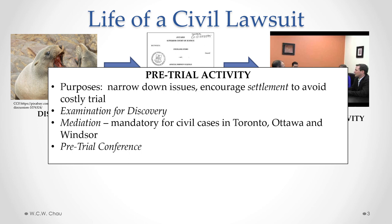The final step before actually going to trial is something called a pretrial conference. A pretrial conference involves the two parties and their lawyers meeting with a judge — not the judge that will hear the trial, but a real judge of that court. The judge will be appraised of the evidence obtained through discovery and will provide his or her opinion about the strengths and weaknesses of each party's case, and could also push the parties towards coming to a settlement in order to avoid trial.